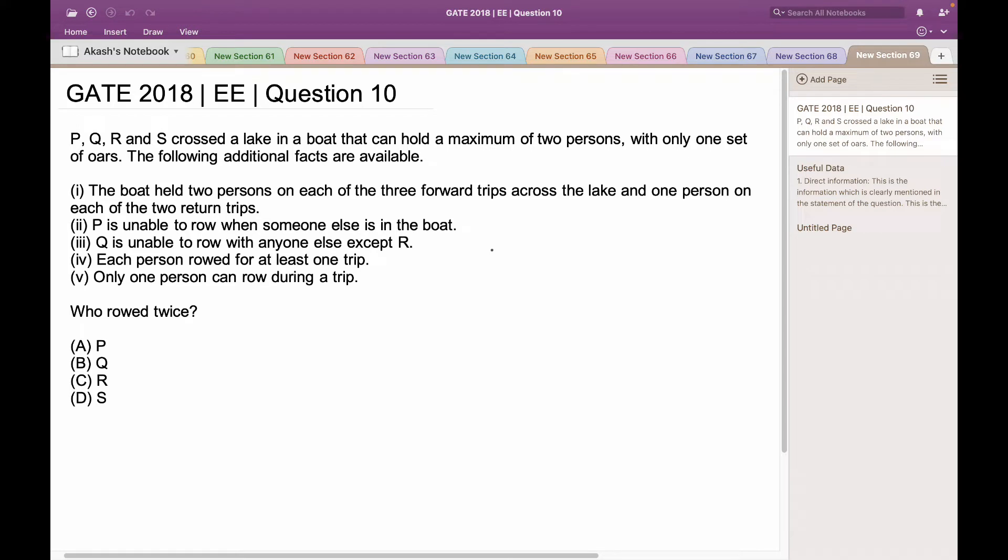In this problem, we have been given a certain set of information and based on the deductions from the information, we have to determine which among these four people have rowed twice. In order to solve this problem, let's have a look at the useful info.